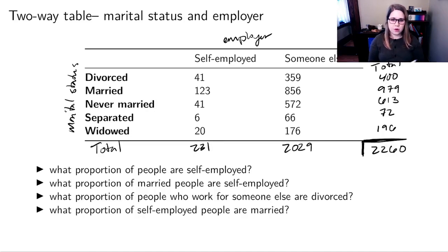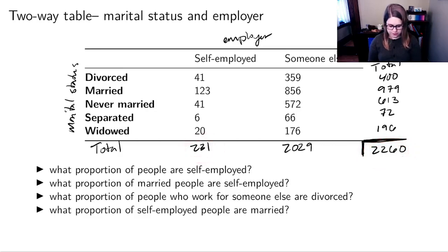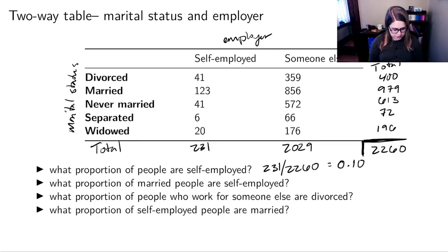Now that we have all the totals, it should be relatively straightforward to figure out the proportions. The first question asks what proportion of people are self-employed — out of everyone, how many are self-employed. So I would just do 231 divided by 2260, and that's about 0.10.